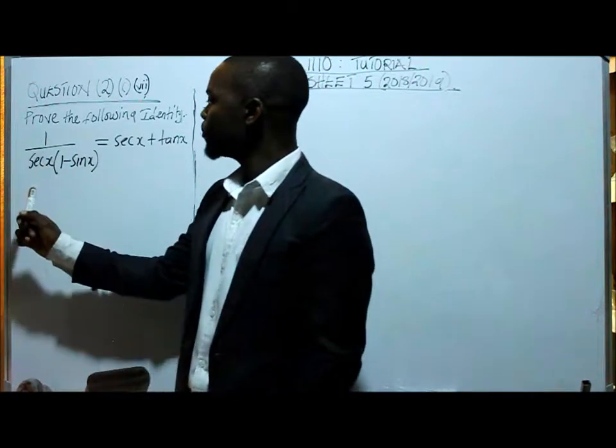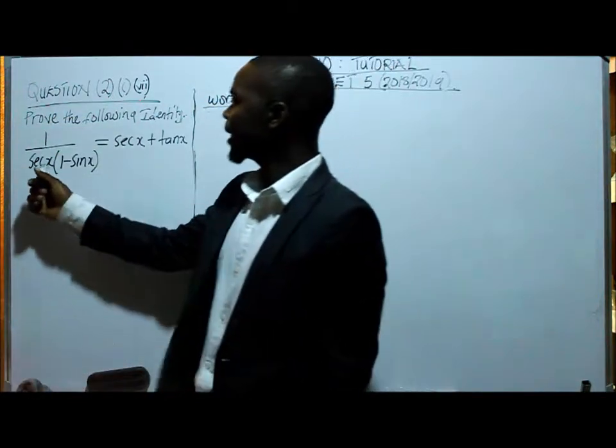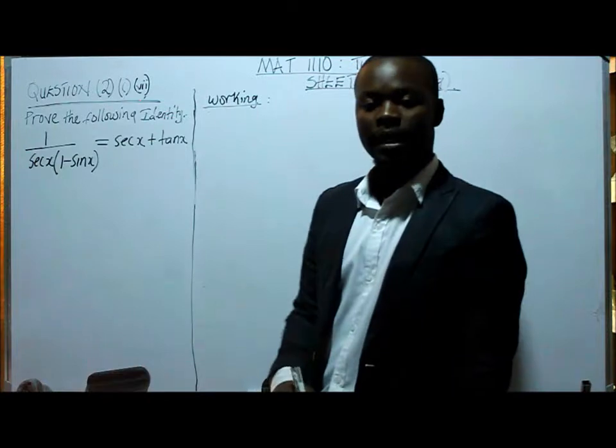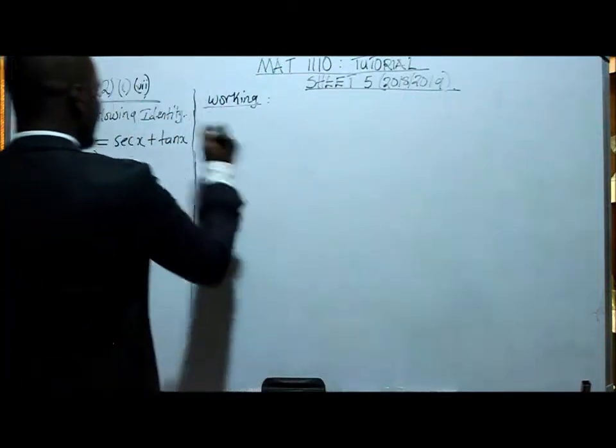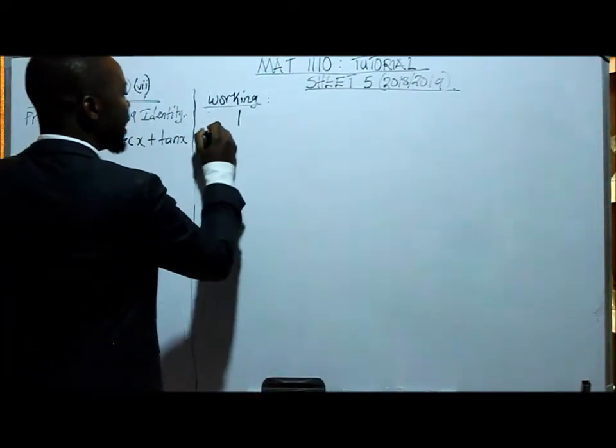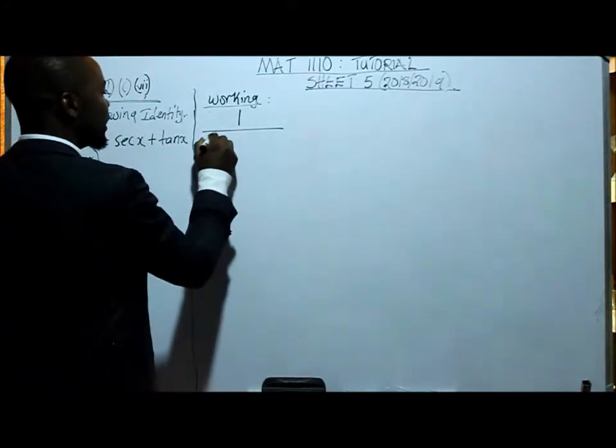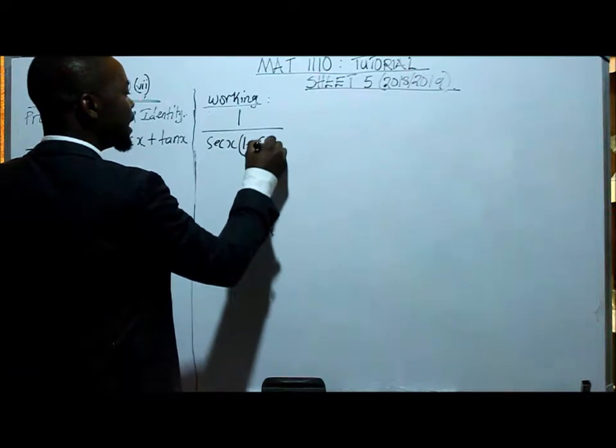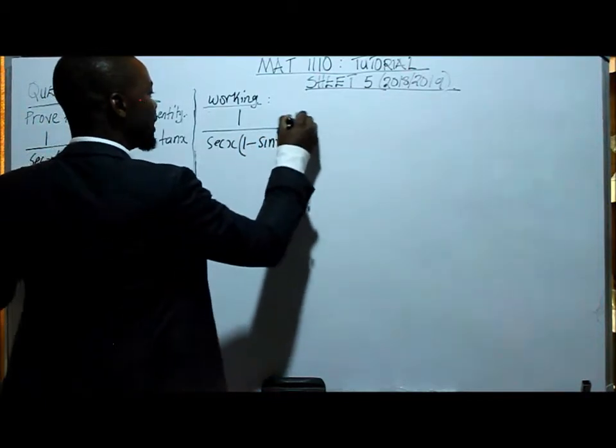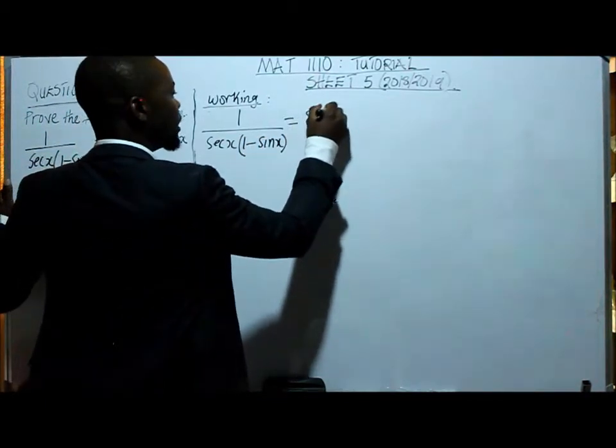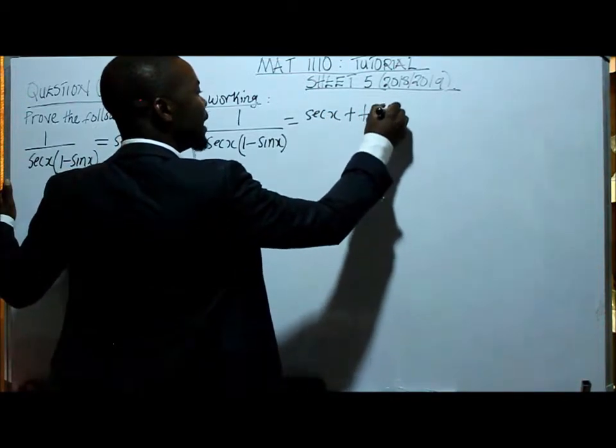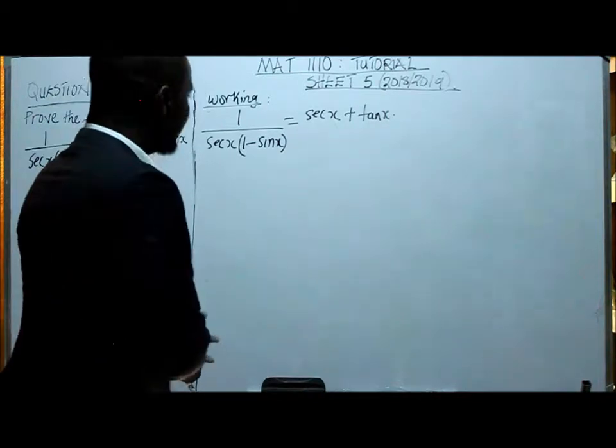We have got 1 over everything divided by sec x open bracket 1 minus sin x equals sec x plus tan x. So let me write it on this part of the board. We have got this identity.